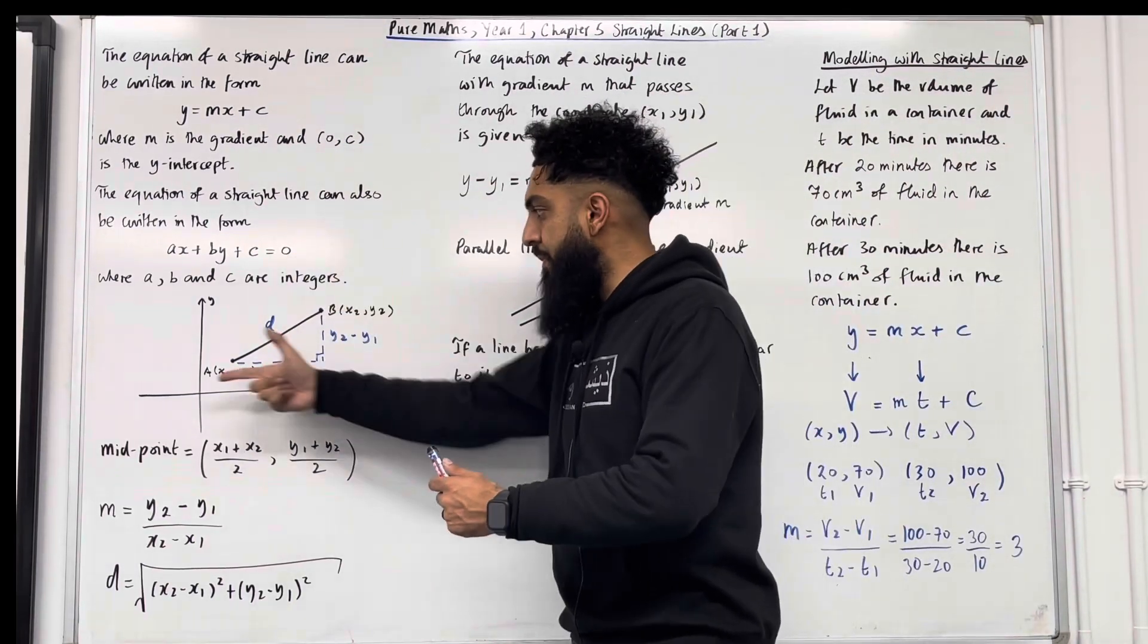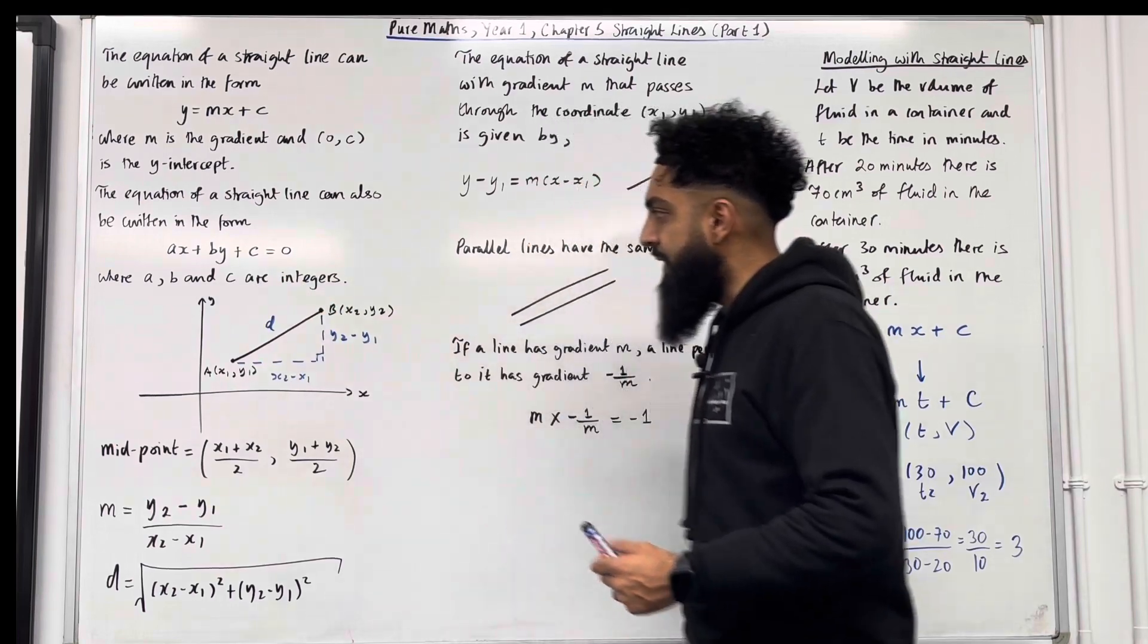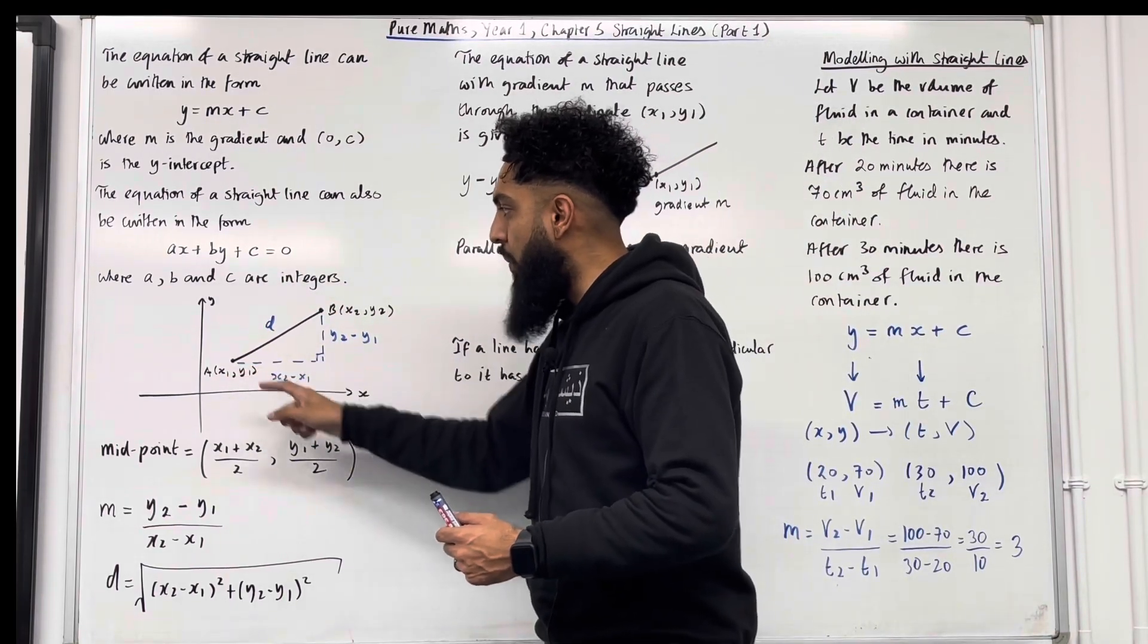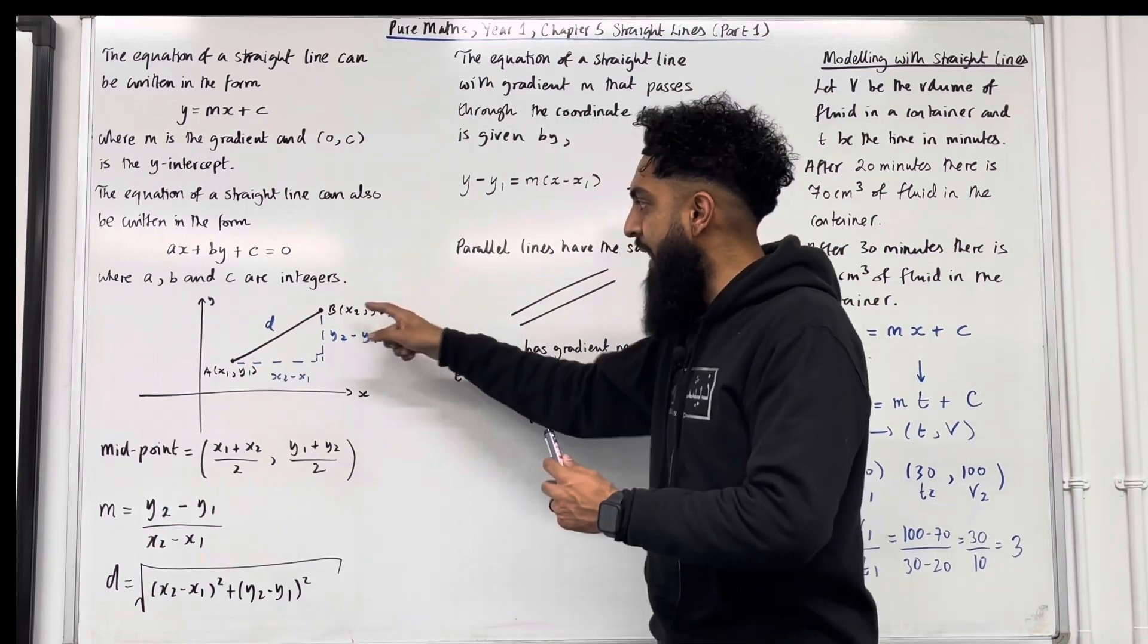So I've got a coordinate grid, y and x axis. I've got a straight line. This is the point A with coordinate x1, y1. This is the point B with coordinate x2, y2.